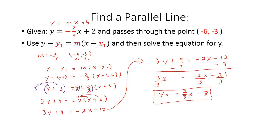The key is having any point on the line and the slope, then plugging that information in for x1, y1, and m in the point-slope form and solving the equation for y. This one required a little extra work because of the fraction. Pause the video if you need time to write all of that down.